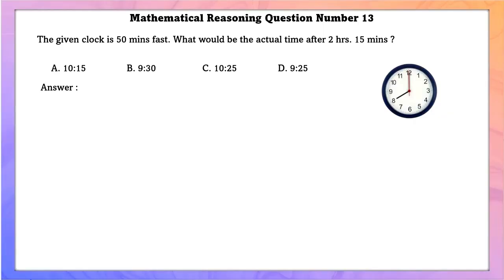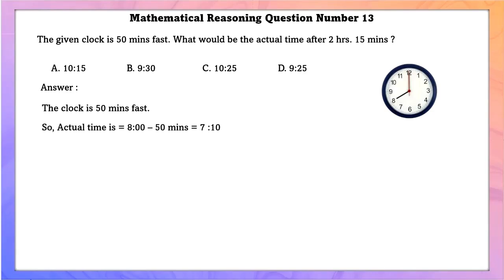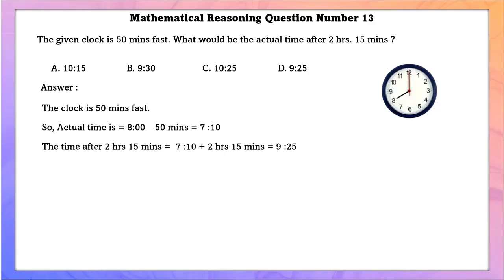Mathematical reasoning question number 13. The given clock is 15 minutes fast. What would be the actual time after 2 hours 15 minutes? Since the clock is 15 minutes fast and shows 8 o'clock, the actual time is 8:00 minus 15 minutes, which is 7:45. Adding 2 hours 15 minutes gives an actual time of 9:25.